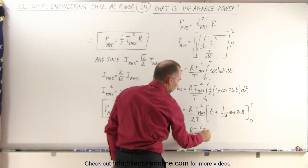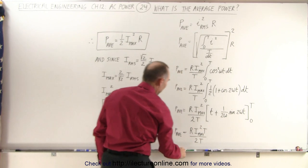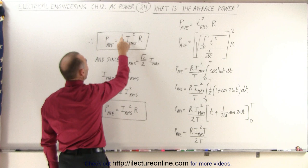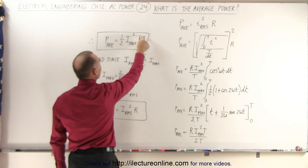So we multiply that times the period, the periods cancel out, and we then notice that the average power is defined as 1 half I max squared times R.